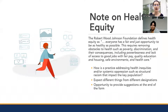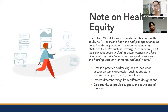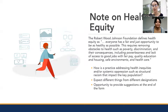A note on health equity: the Robert Wood Johnson Foundation defines health equity as everyone having a fair and just opportunity to be as healthy as possible, requiring removal of obstacles such as poverty, discrimination, and lack of access to good jobs, quality education and housing, safe environments, and health care. We are committed to not including any practices in the database that are not in some way addressing health inequities or systemic oppression, such as structural racism — in alignment with AMTRIP's commitment to anti-racist work and promoting health equity.